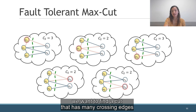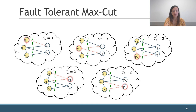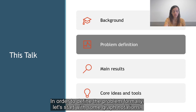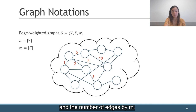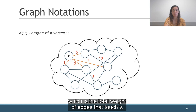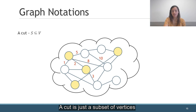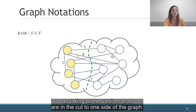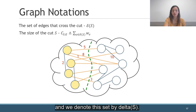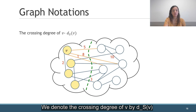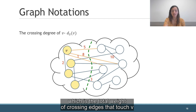We want to find a cut that has many crossing edges for every vertex that is removed. In order to define the problem formally, let's start with some graph notations. We deal with edge-weighted graphs so that every edge has a non-negative weight. We denote the number of vertices by n and the number of edges by m. We denote the degree of a vertex v by d(v), which is the total weight of edges that touch v.